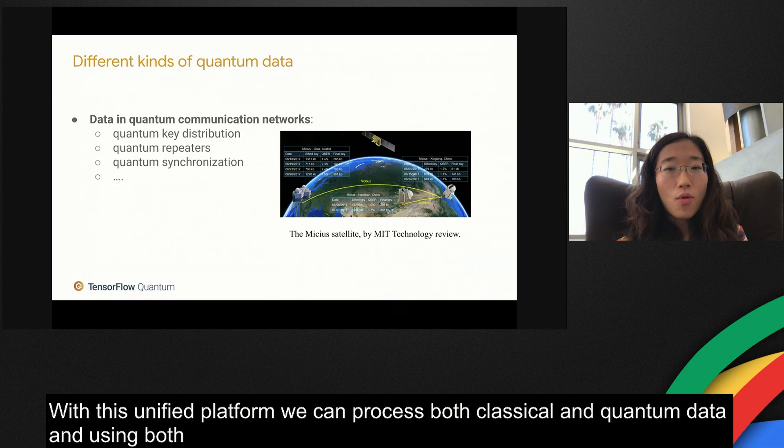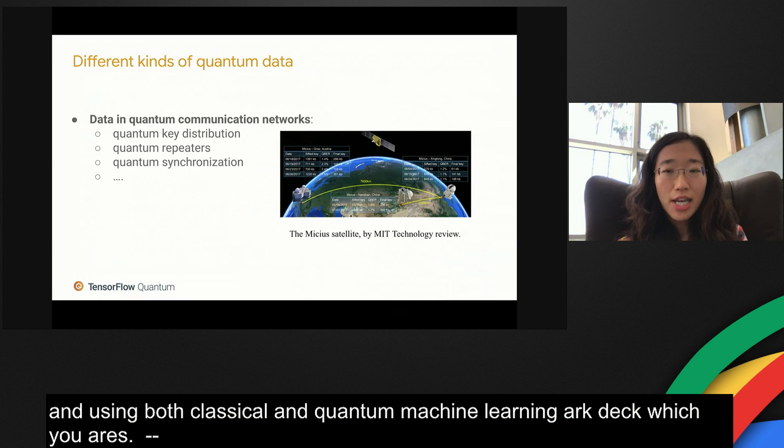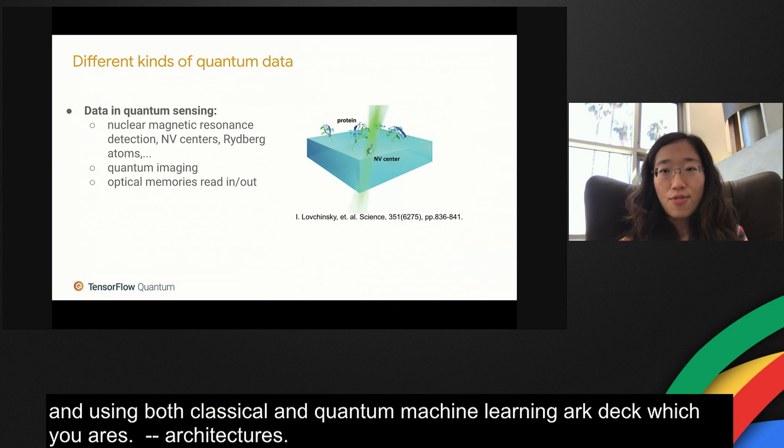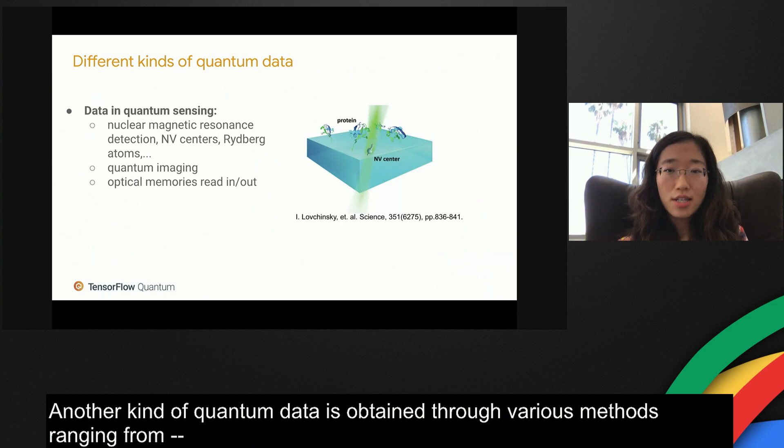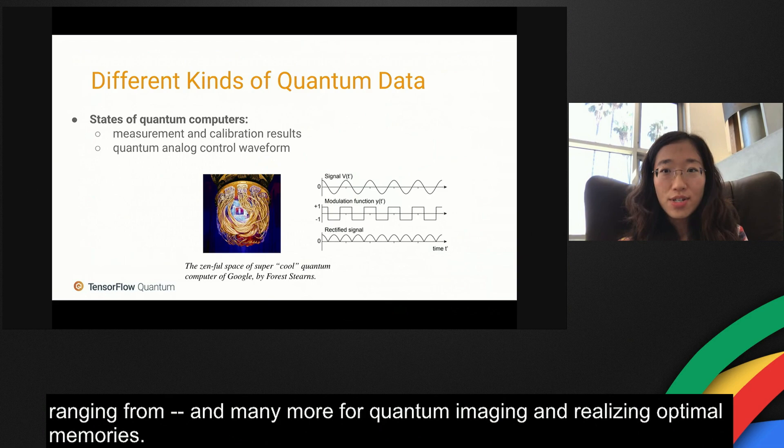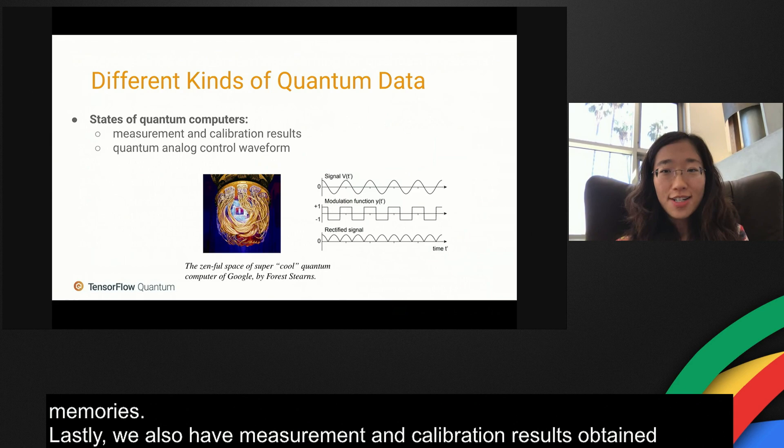What do we mean by quantum data? One kind of quantum data presents in the fast developing quantum communication networks. For example, the longest quantum key distribution transmits information carried by a single photon across the continent between Austria and China through a satellite relay. Another kind of quantum data is obtained through various quantum sensing methods, ranging from NMR, NV center to Rydberg atoms, and many more for quantum imaging and realizing optical memories.